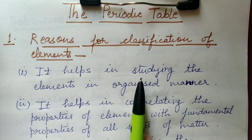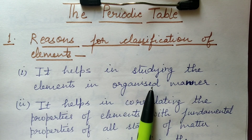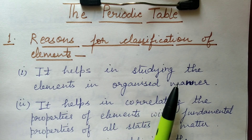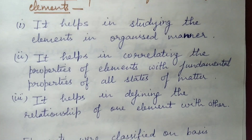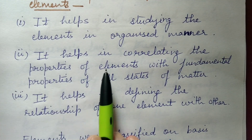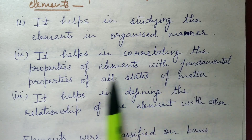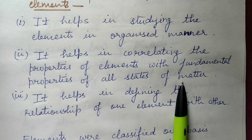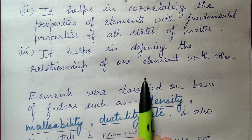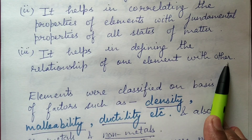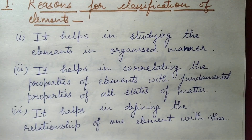Classification made the study of elements organized — you can say it helps in studying the elements in a systematic manner. Classification also helps in correlating the properties of elements with the fundamental properties of all the states of matter. It also helps in defining the relationship between one element and another.